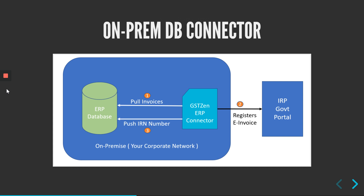The connector will validate the data, create the proper JSON format as per the schema, and push it to the IRP or the government portal to register the e-invoice. GST-Zen will receive acknowledgement from the IRP portal, and whatever acknowledgement number and IRN number it receives, it will write back to the ERP database if you configure it to do so.